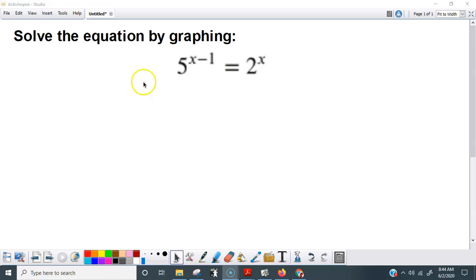What we have here is we have an exponential expression on the left side of this equation. The reason why it's exponential is because we have a number as the base and a variable in the power. Then we have another exponential expression on this side.